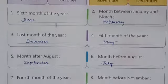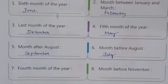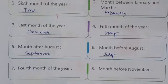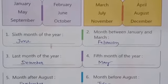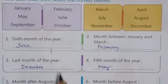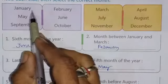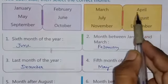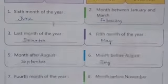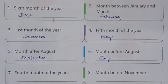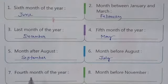Question number seven: the fourth month of the year. Starting from the first month — first, second, third, fourth — so the fourth month is April. Write down the answer: the fourth month is April.